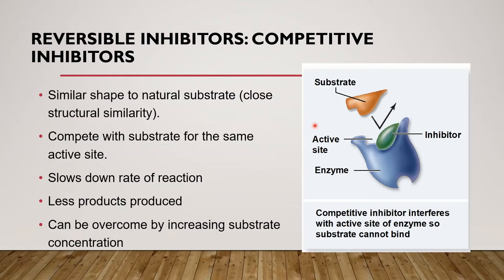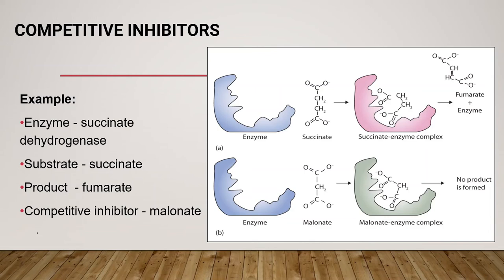The competitive inhibitor fits into the active site and combines with the enzyme. This will slow down the rate of reaction and less product will be produced. The competitive inhibitor interferes with the active site of the enzyme so the substrate cannot bind. To overcome this problem, you can increase substrate concentration. A competitive inhibitor competes with the substrate for binding to the active site. When the inhibitor occupies the active site, it forms an enzyme-inhibitor complex, and the enzyme cannot react until the inhibitor dissociates.